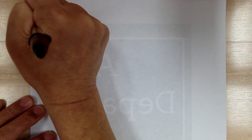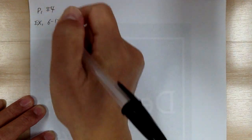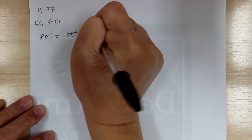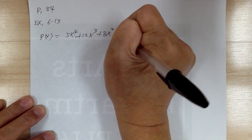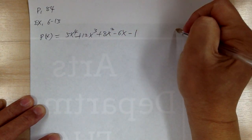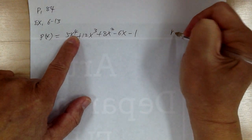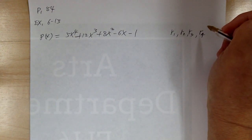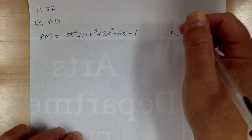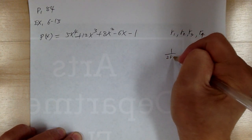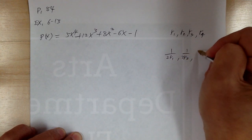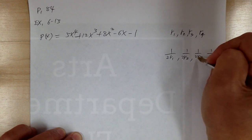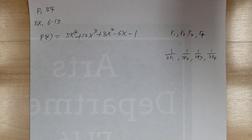Now example 6-13. You have a polynomial equal to 5x to the four plus 12x cubed plus 8x squared minus 6x minus 1. This has four roots: r1, r2, r3, r4. You're looking for a polynomial whose roots are half the reciprocal — meaning one over two times each root.